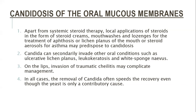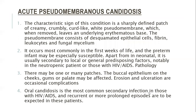The acute pseudomembranous candidiosis is the most common presentation of oral candidiosis. The characteristic sign is a sharply defined patch of creamy, crumbly, curd-like white pseudomembrane which when removed leaves an underlying erythematous base. The pseudomembrane consists of desquamated epithelial cells, fibrin, leukocytes, and mycelial fungal elements. It occurs most commonly in the first week of life, and preterm infants are especially susceptible. Apart from neonates, it is usually secondary to local or generalized predisposing factors, notably neutropenia and HIV.